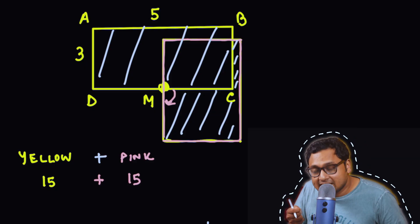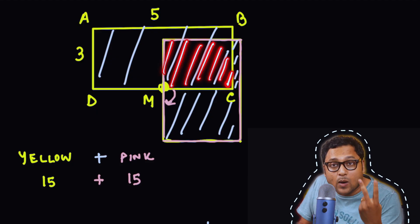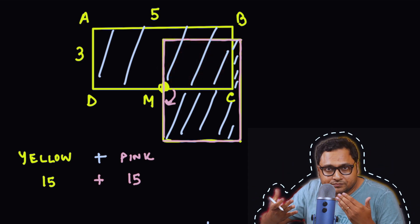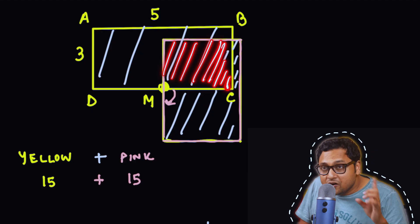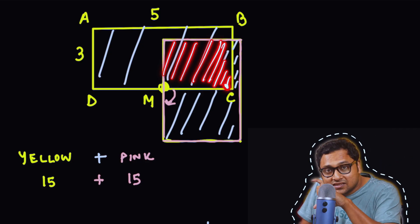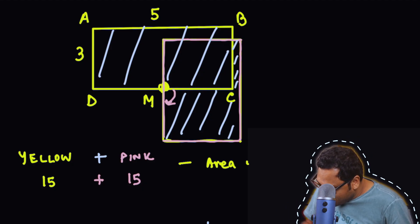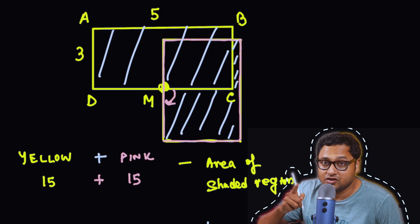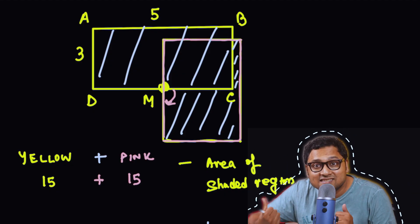The problem is this: when you add 15 and 15, you are counting this overlapping region twice, which you don't want to do, because you just want the area of the shaded region. You don't want to overcount. So if I could just find the area of the overlapping region, I would be able to delete that. I have counted it twice, so I would have deleted it once to get the area of the shaded region.